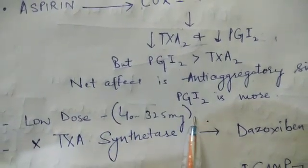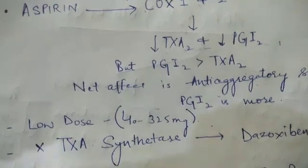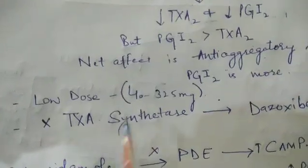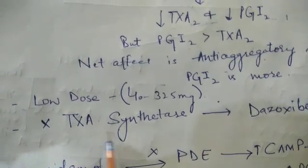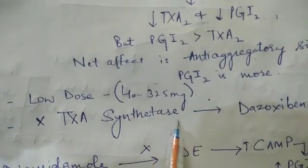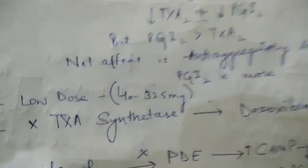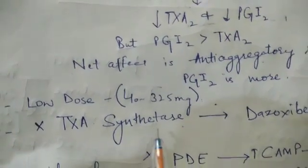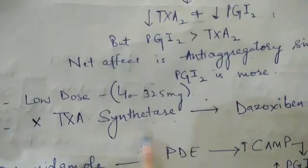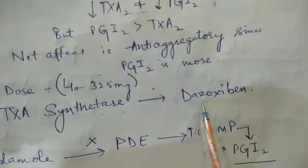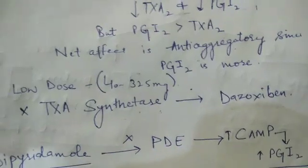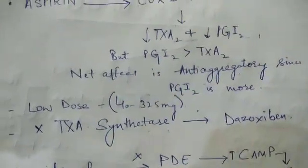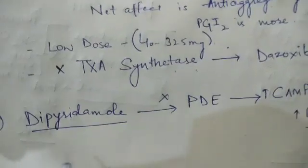Aspirin works as an antiplatelet drug at low dose, which is 40 to 325 milligrams. Another point to remember is aspirin does not block the thromboxane synthetase enzyme, but it reduces thromboxane synthesis by blocking the COX enzyme. Thromboxane synthetase enzyme is blocked by another drug which is Dazoxiben.